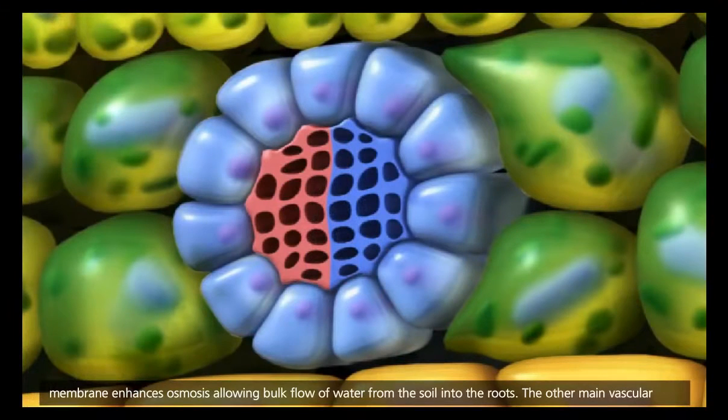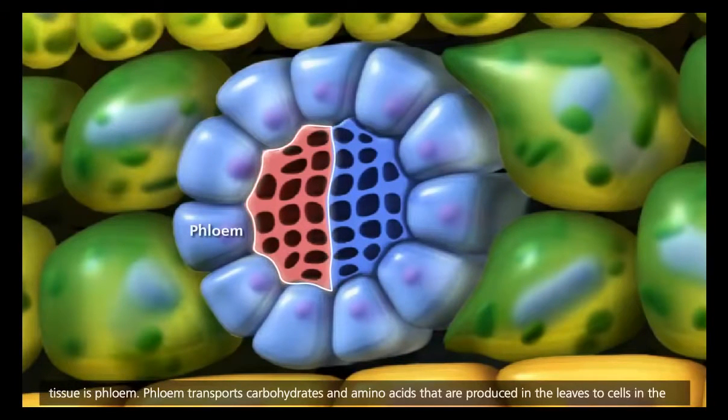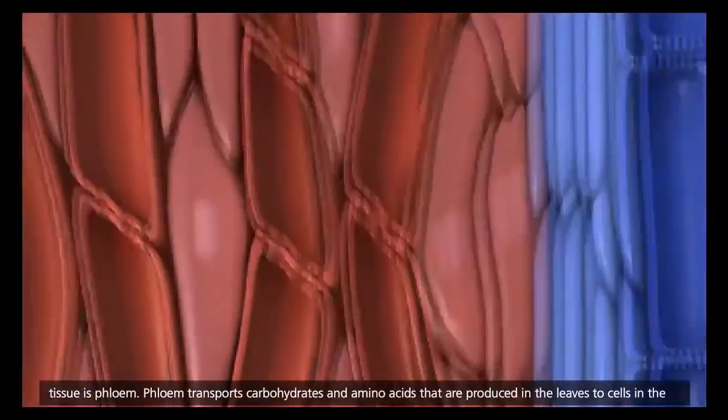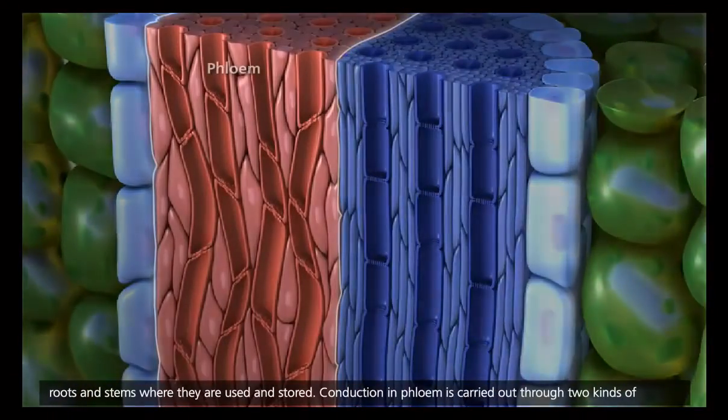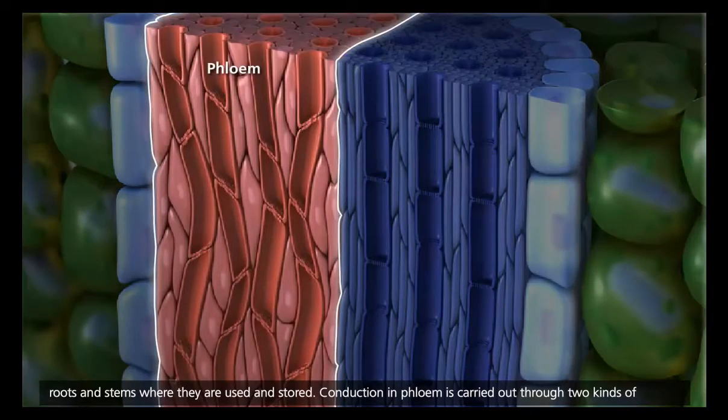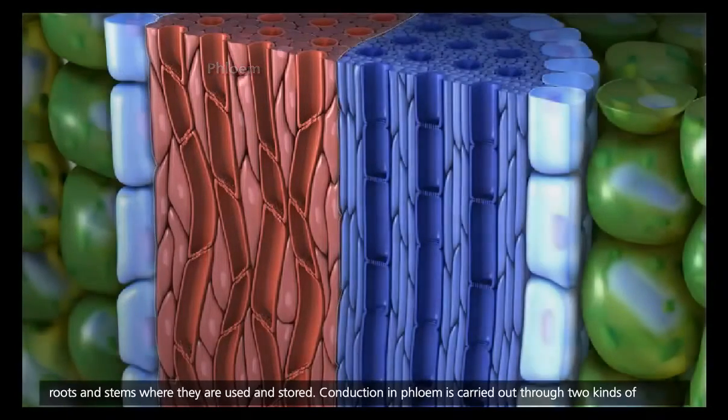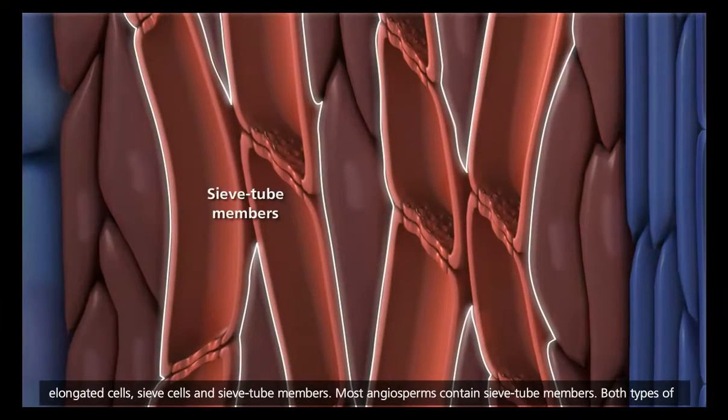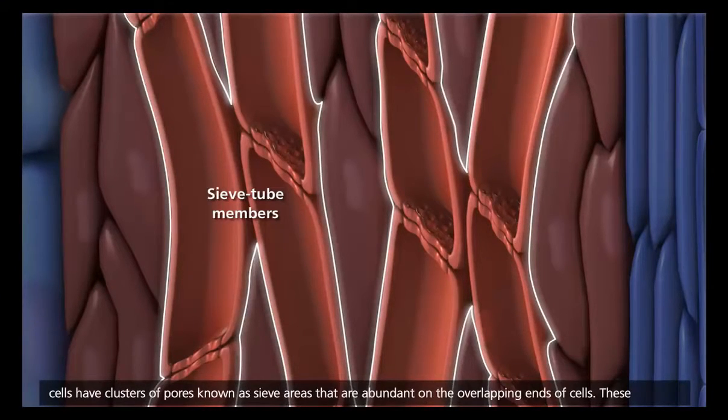The other main vascular tissue is phloem. Phloem transports carbohydrates and amino acids that are produced in the leaves to cells in the roots and stems where they are used and stored. Conduction in phloem is carried out through two kinds of elongated cells, sieve cells and sieve tube members. Most angiosperms contain sieve tube members. Both types of cells have clusters of pores known as sieve areas that are abundant on the overlapping ends of cells.